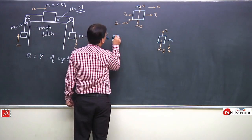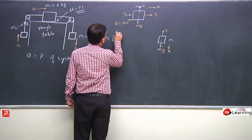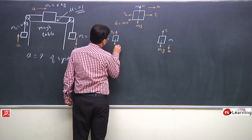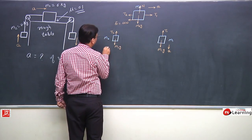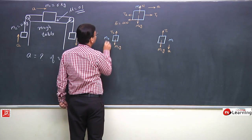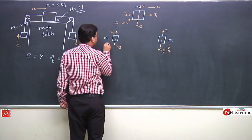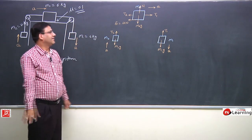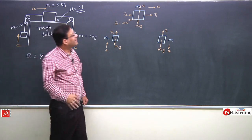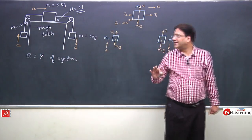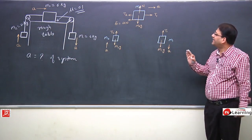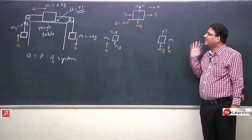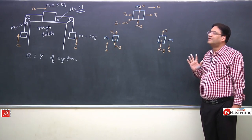For block M2: T2 acts upward, M2·g downward, and acceleration a in the upward direction. These free body diagrams show all external forces and the acceleration of each particle in the system.